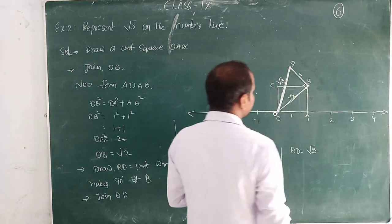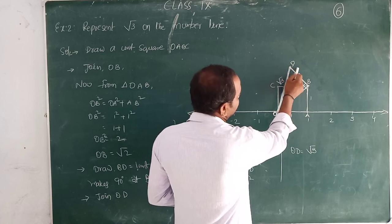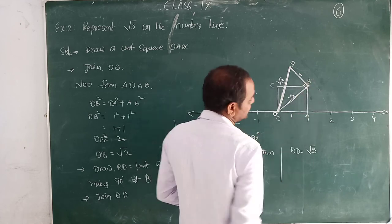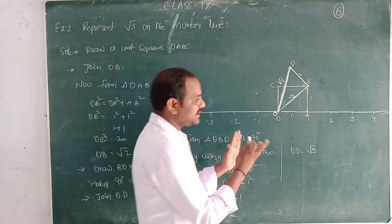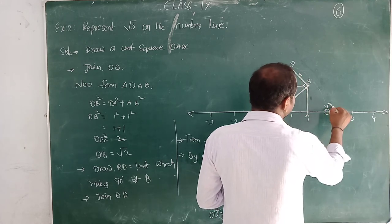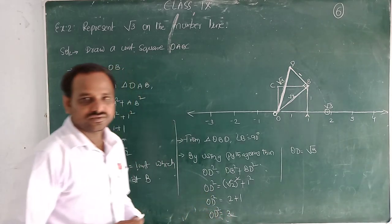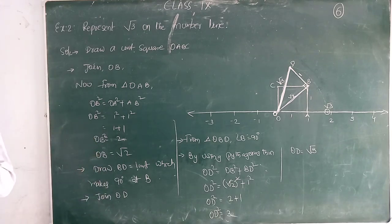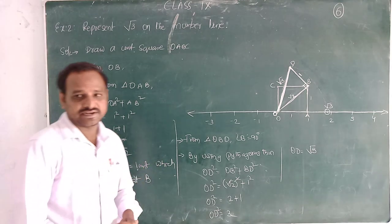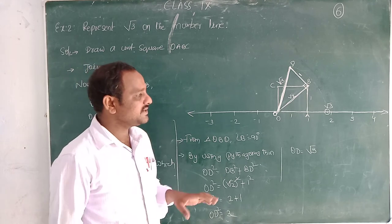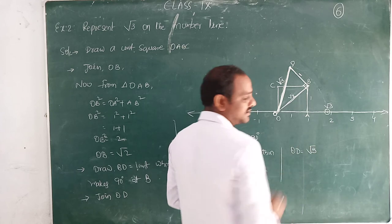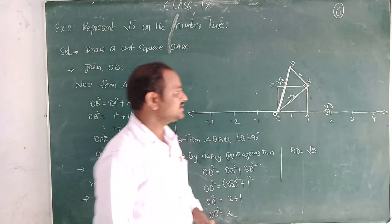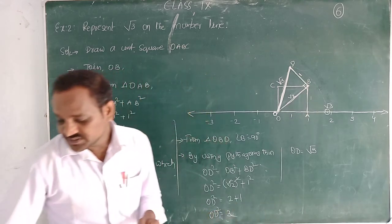By using compass with the radius of OD, draw an arc from O. Where it intersects on the number line is root 3 — that is the representation of root 3 on the number line. The value of root 3 is approximately 1.73, so it lies between 1 and 2. We got the representation between 1 and 2 on the number line. This is the representation of root 3 on the number line.